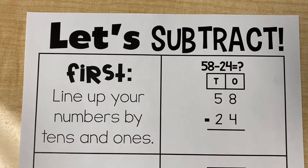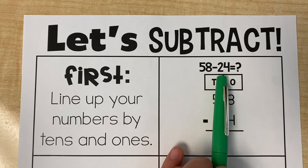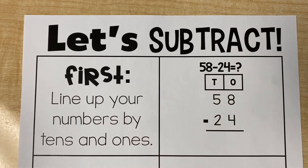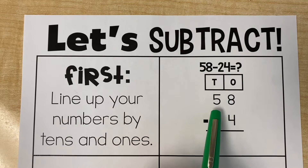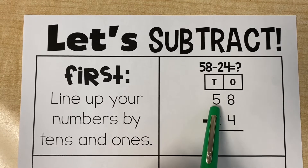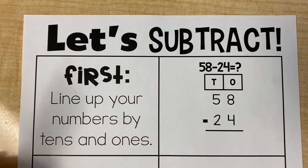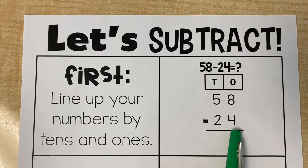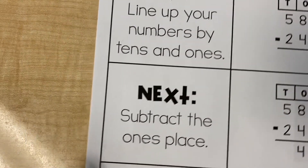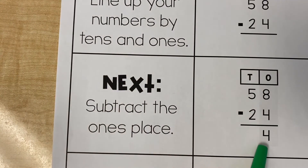First, we would line our numbers up by tens and ones. So in this example, you can see it's 58 minus 24 equals, and there's a question mark here. So you've got your basic place value chart with your tens and your ones, and we place the number 58 right underneath that, placing the 5 under the tens because the value of that 5 is 50, and our 8 under the ones because the value of that 8 is simply 8 ones. And then we place our 24 in the same way, our 2 under the tens and our 4 under the ones. And now we are going to subtract our ones place. So here we have our 8 and our 4. We're going to say 8 minus 4, and the answer is 4.